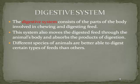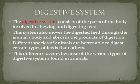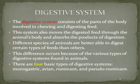The system also removes the digested food through the animal's body and absorbs the products of digestion. Different species of animals are better able to digest certain types of foods than others. This difference occurs because of the various types of digestive systems found in animals. There are four basic types of digestive systems.